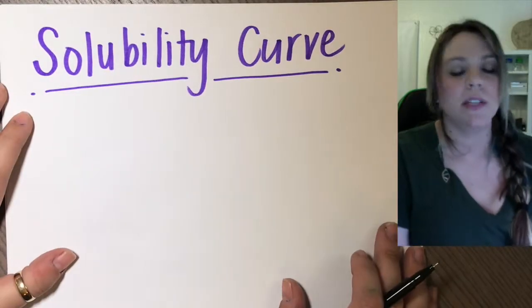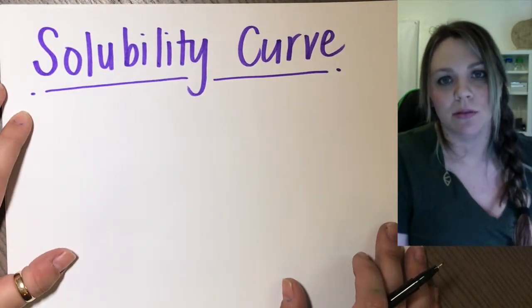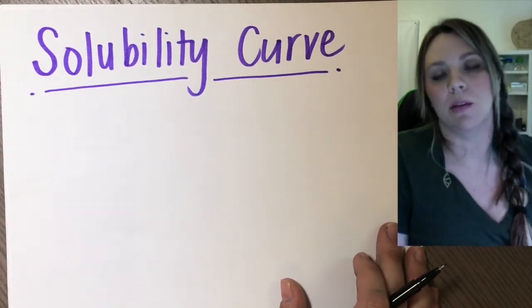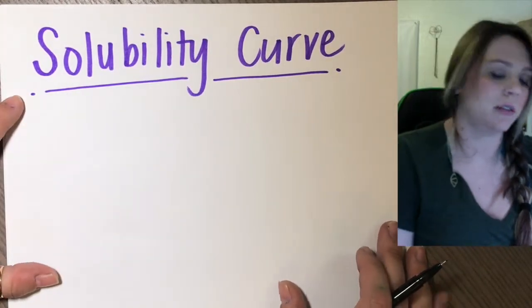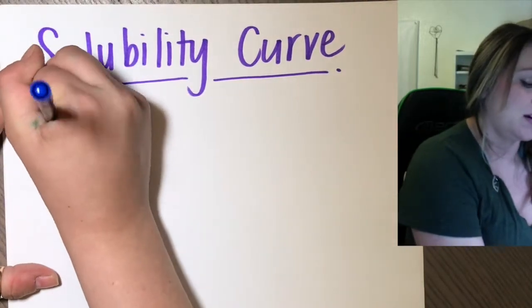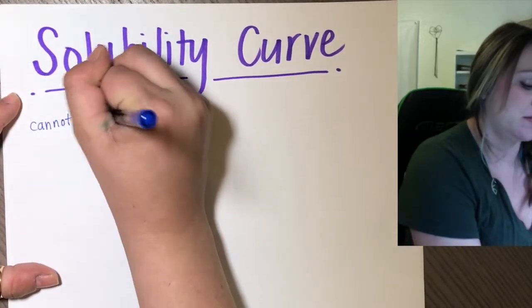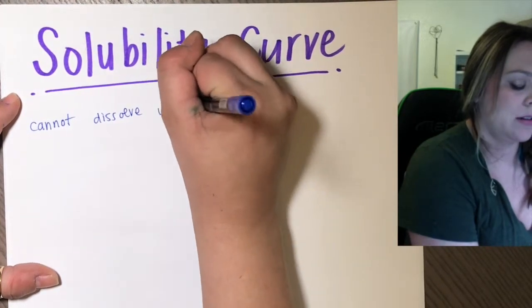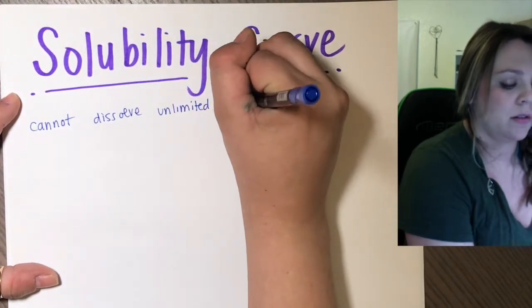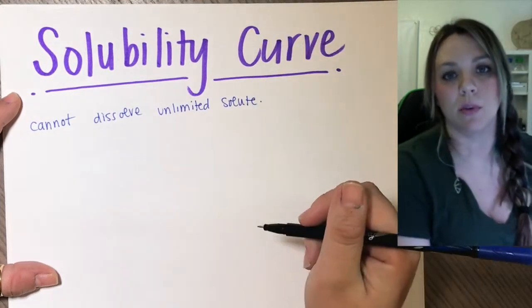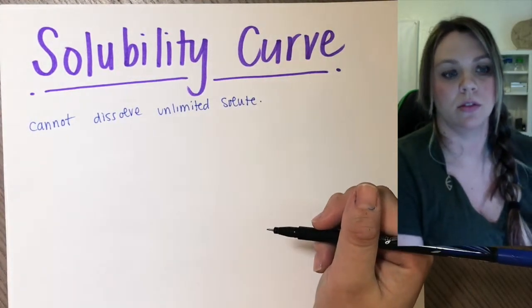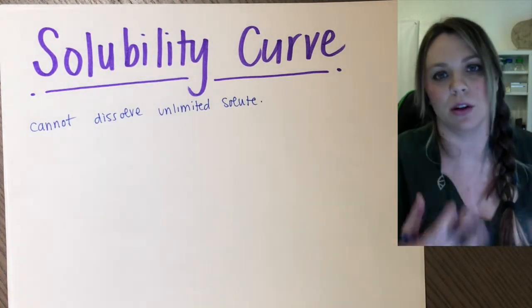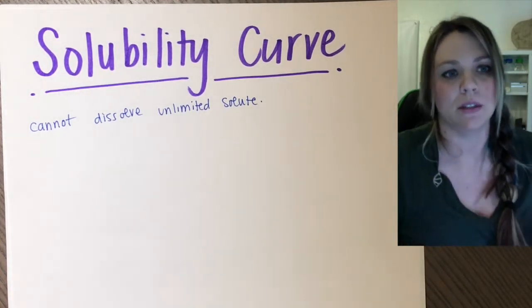just looking at what is a solubility curve and how to actually read one. The basic idea of a solubility curve is that you cannot continue to dissolve unlimited amounts of solute into a solvent. At some point, your solution is going to be totally filled with solute, and you're not going to be able to dissolve anymore.